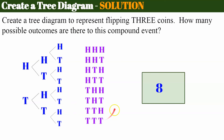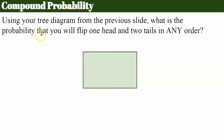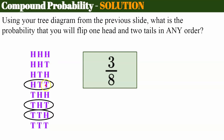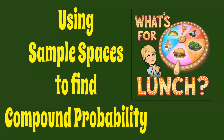Now I need the sample space because I'm going to ask you to find the probability of something. Using the tree diagram from the previous slide, what is the probability that you will flip one head and two tails in any order? Remember, order does not matter. Go ahead and pause, find the probability, and come back. Welcome back. Here's my organized list. I identify three outcomes that have one head and two tails. So three of my eight possible outcomes match, giving a probability of three out of eight. That's how you use sample spaces to find compound probability. Please subscribe to my channel, give me a thumbs up if you enjoyed the video, and have a great day.